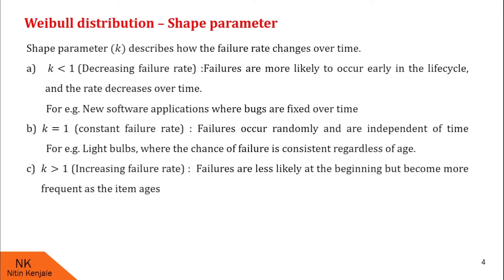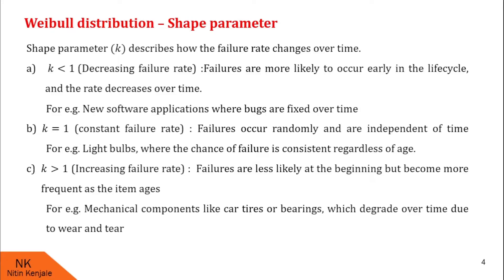If k is greater than 1, then the failure rate is increasing. That means failures are less likely at the beginning but become more frequent as time ages. For example, mechanical components like cars, tires, or bearings which degrade over time due to wear and tear. I hope you understood this parameter.